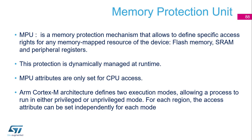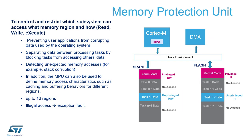Cortex-M architecture defines two execution modes allowing a process to run in either privileged or unprivileged mode. For each region of the MPU, the access attribute can be set independently. The purpose of the MPU is to control and restrict which subsystem can access which memory region and how — in read, write, and execute — preventing user applications from corrupting data used by the operating system. If you have a kernel, you execute it in privileged mode, and tasks run in an unprivileged region defined in the MPU, separating data between processing tasks and ensuring one task cannot access data from another or from the kernel.